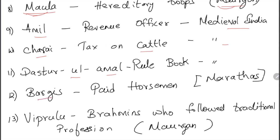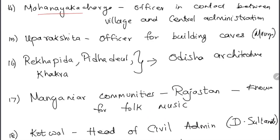Buggies were paid horsemen in the Maratha period. Viprulu were Brahmins who followed their traditional profession during the Mauryan period. Mahanayakacharya were officers in contact between the village and the central administration during the Mauryan period. Uprakshita were officers for building caves during the Mauryan period.